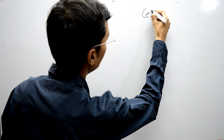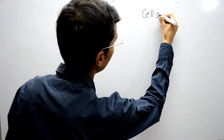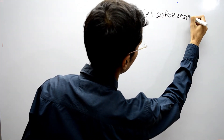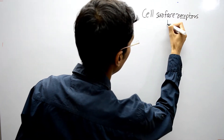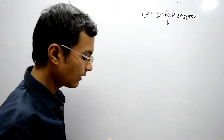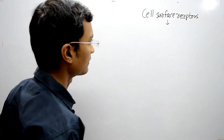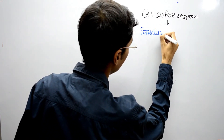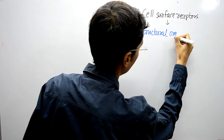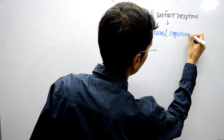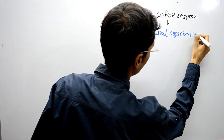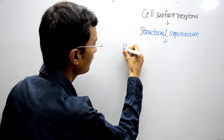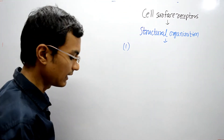Cell surface receptors are grouped on the basis of structural organization and on the basis of the molecules which are linked to the cell surface receptors. On the basis of structural organization, they are grouped into two main types or two main superfamilies.